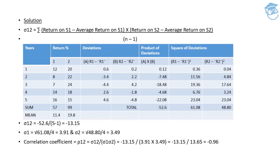I have made a tabular presentation segregated into five major parts: number one is years, number two is the returns we expect to receive from the company in percentage form for both securities, followed by the deviations. To calculate deviations, whatever return is provided for each year, we just subtract the average return from each year's return, and by that we get our deviations. Followed by the product of deviations.